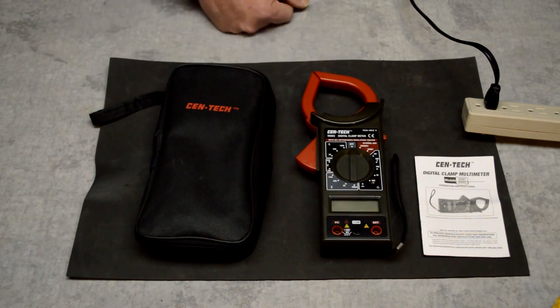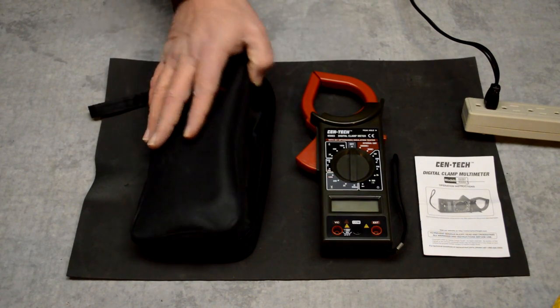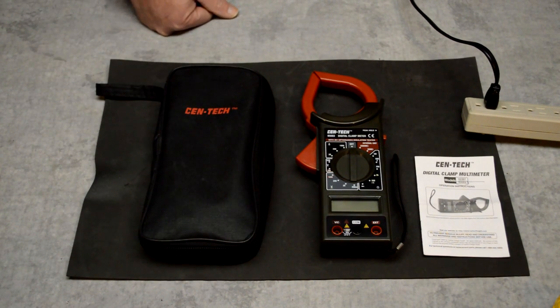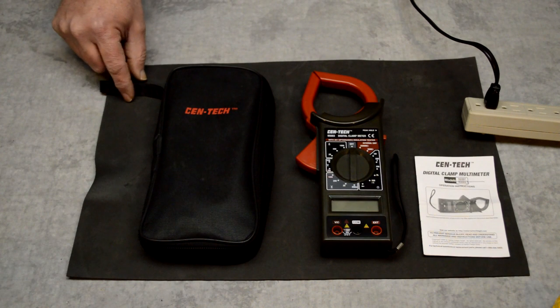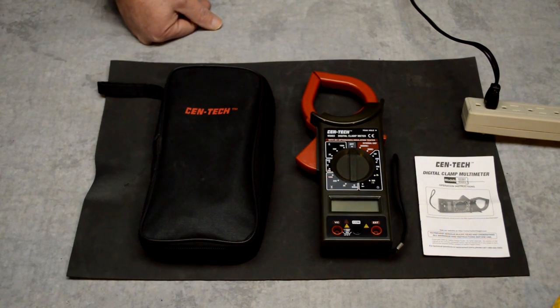It comes with the normal multimeter functions as well as the clamp meter. It comes with a case and some leads, so it's a pretty good low-cost meter. I will say though that if you're looking for super accuracy, you're going to have to step it up with something a little bit better than this one, but this is good for general purpose.